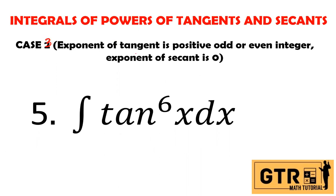For case number 3, the exponent of tangent is positive — odd or even — and we only have example 4. If the exponent of tangent is even and there is no secant, meaning the exponent of secant is 0, this is case 3.